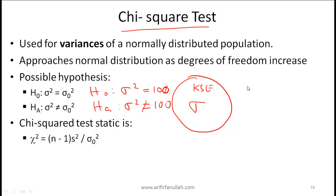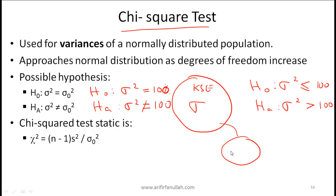For a one-tailed test where you believe the variance exceeds 100, you set up H0: sigma-squared less than or equal to 100 versus H1: sigma-squared greater than 100. To compute the chi-squared statistic, draw your sample — say of size 30 — and calculate: chi-squared equals (n minus 1) times s-squared divided by sigma-naught-squared, which here is 100.